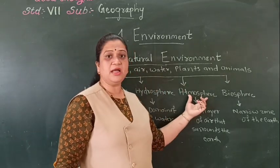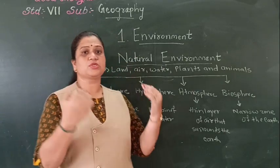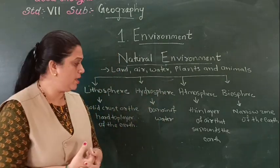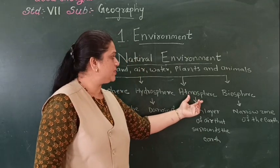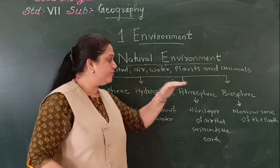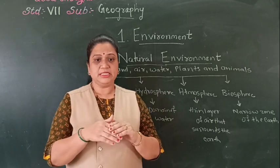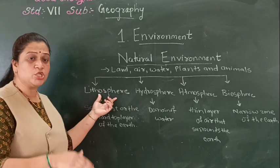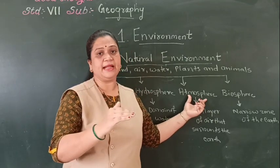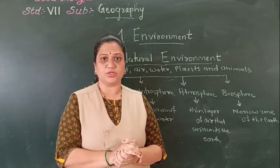Then comes the atmosphere. Our earth is surrounded by a thin layer of air, and that is called the atmosphere. In the atmosphere we have different layers. Because of the atmosphere, we are protected from the harmful rays of the sun. Although we live on the lithosphere, the atmosphere ensures that the sun's harmful radiation does not reach us directly.